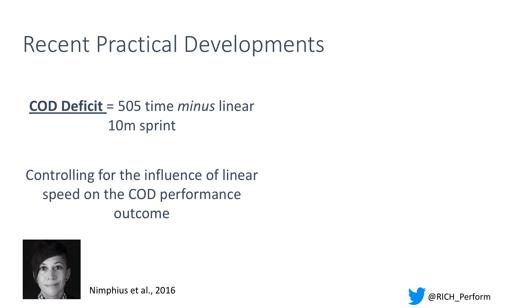We know that if an athlete is really fast in a straight line, that does carry over to a certain extent into their multi-directional movement capabilities. It's not a perfect transfer, but there is an element of transfer. So when we're testing, ideally if we can control for the fact that some people are really fast in a straight line versus somebody who is not, we'll get more information.